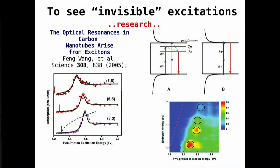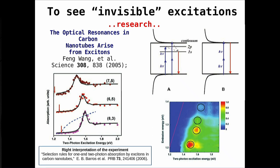The experiment was very nice, but to be honest, they were also lucky. The selection rules they used to explain the experiment turned out to be wrong, as people noticed some years later. However, the 2P level was invisible in two-photon absorption by coincidence rather than by selection rules, so the conclusion was still valid.